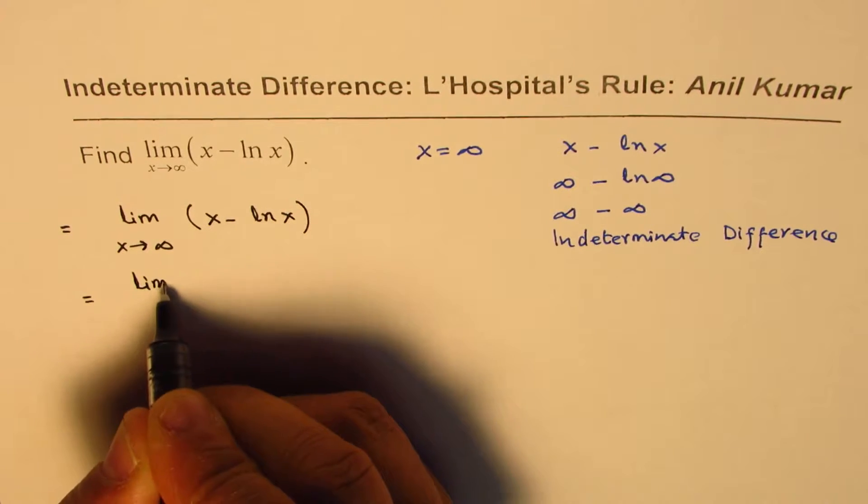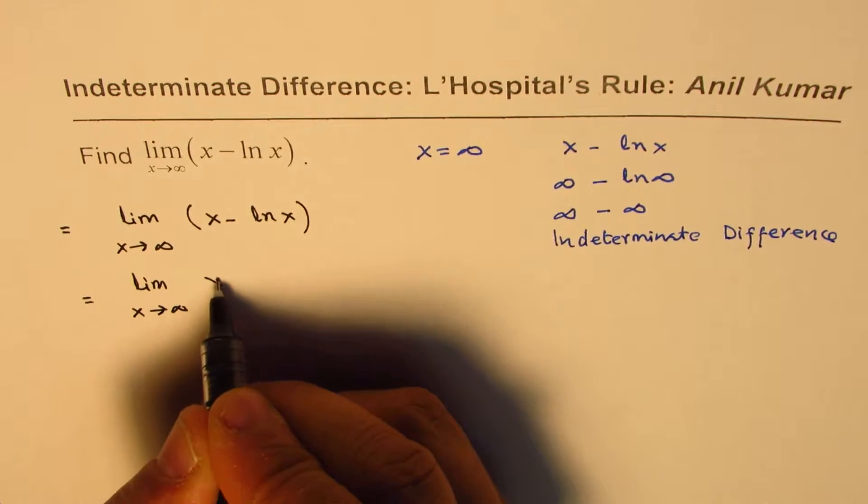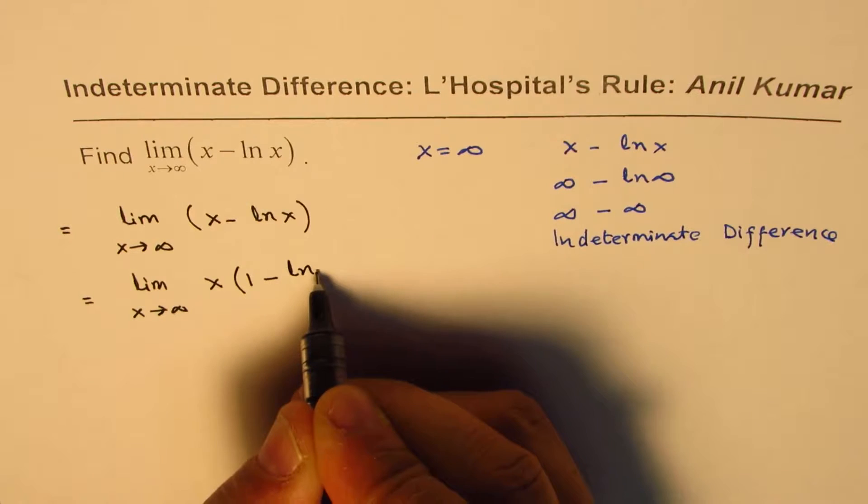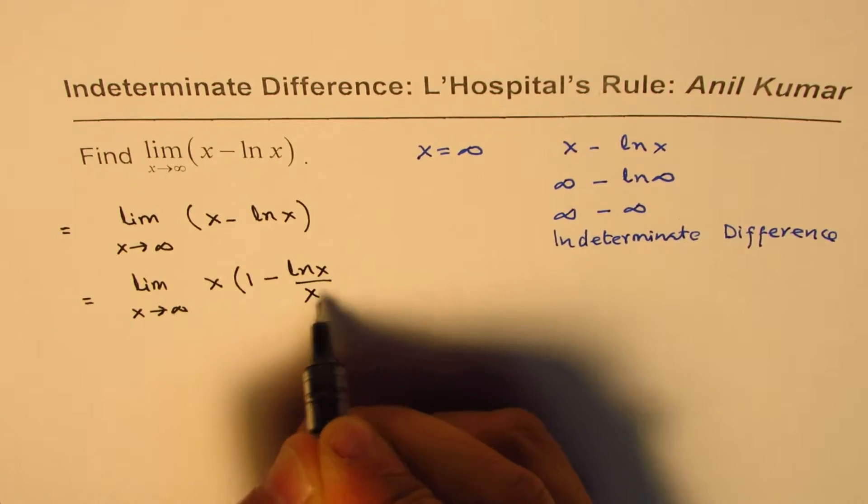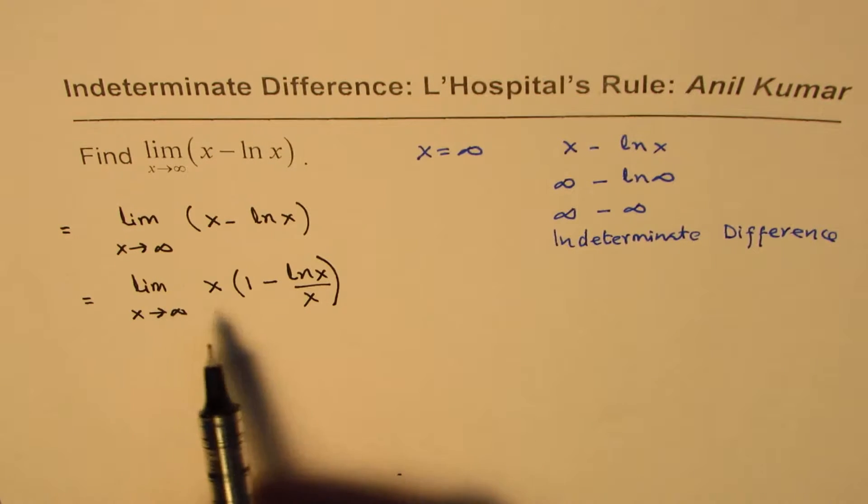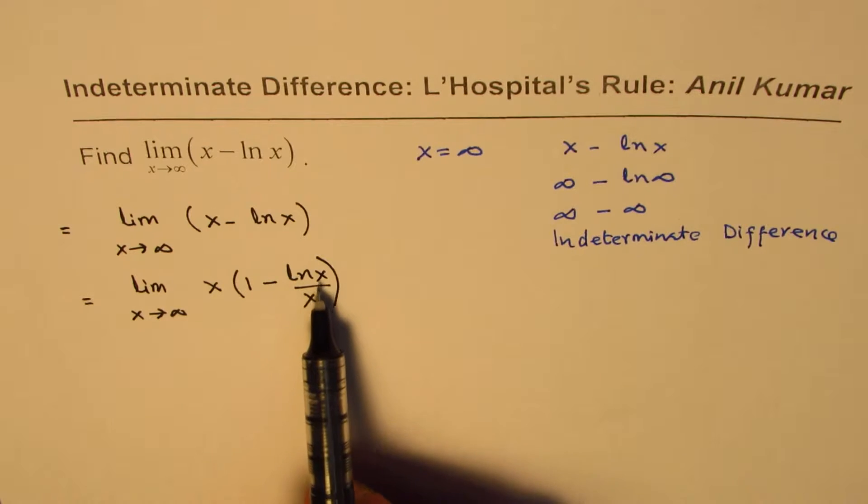We are going to write this as limit x approaches infinity. We'll take x common, and then we can write this as 1 minus ln x over x. Now does that remind you of something? What is the limit of ln x over x as x approaches infinity?